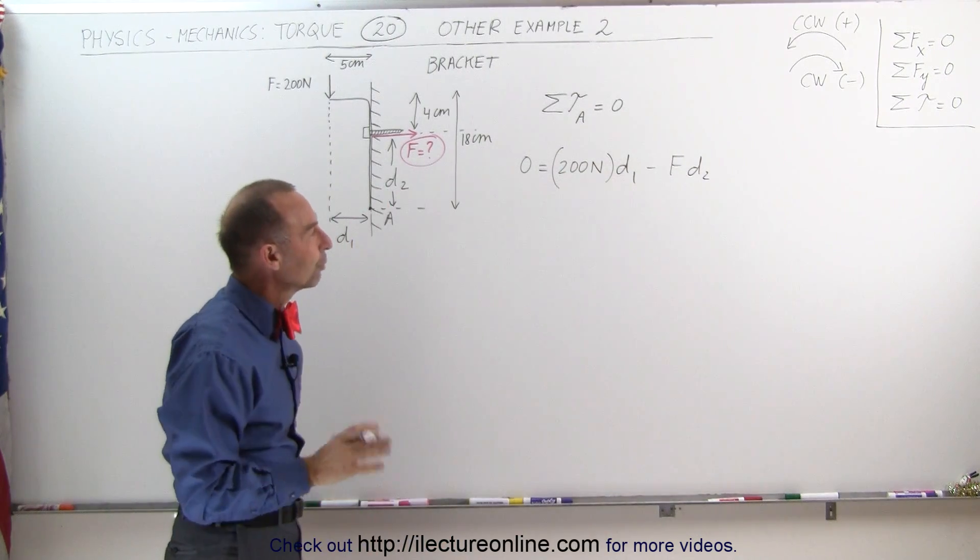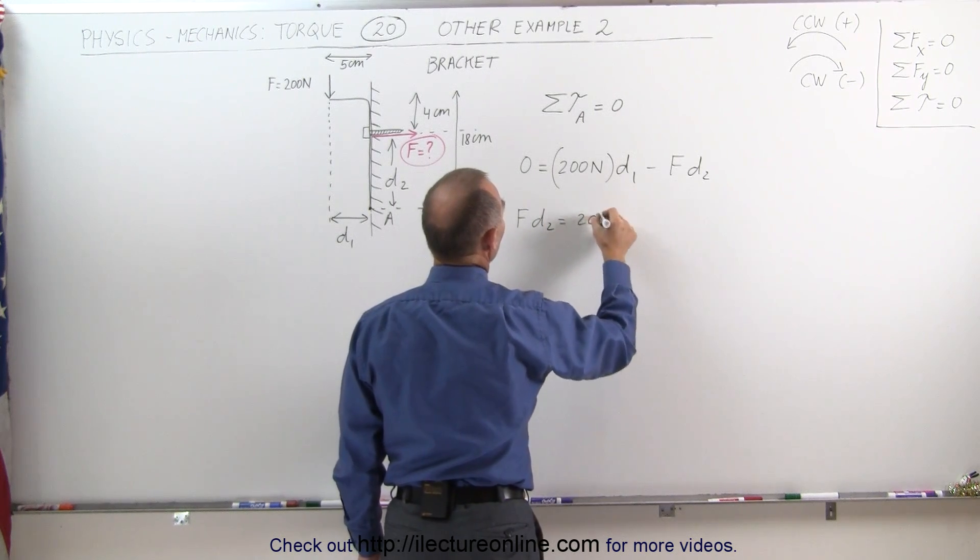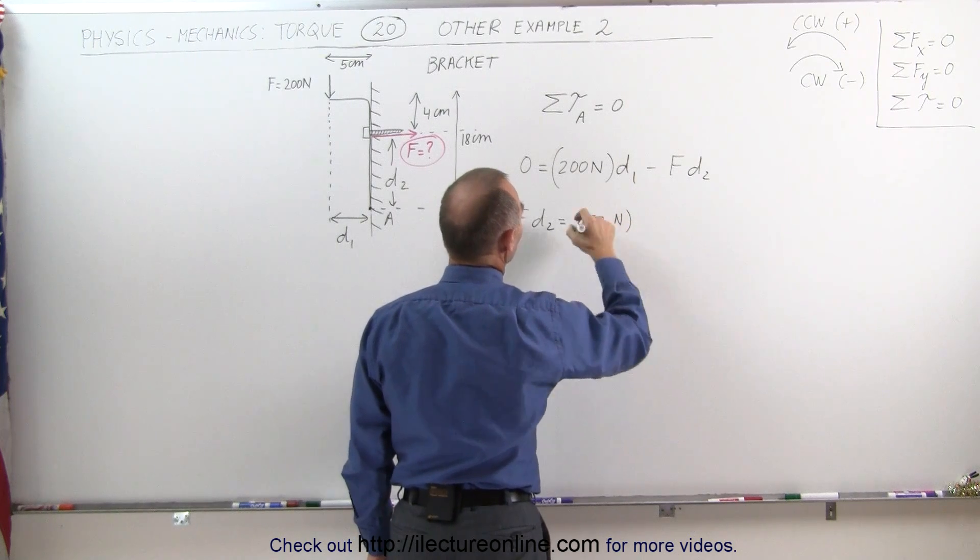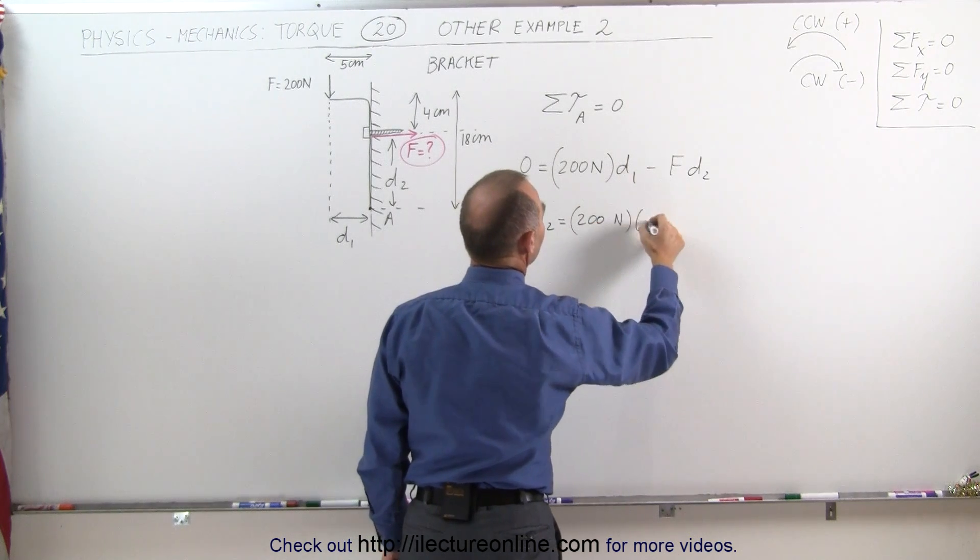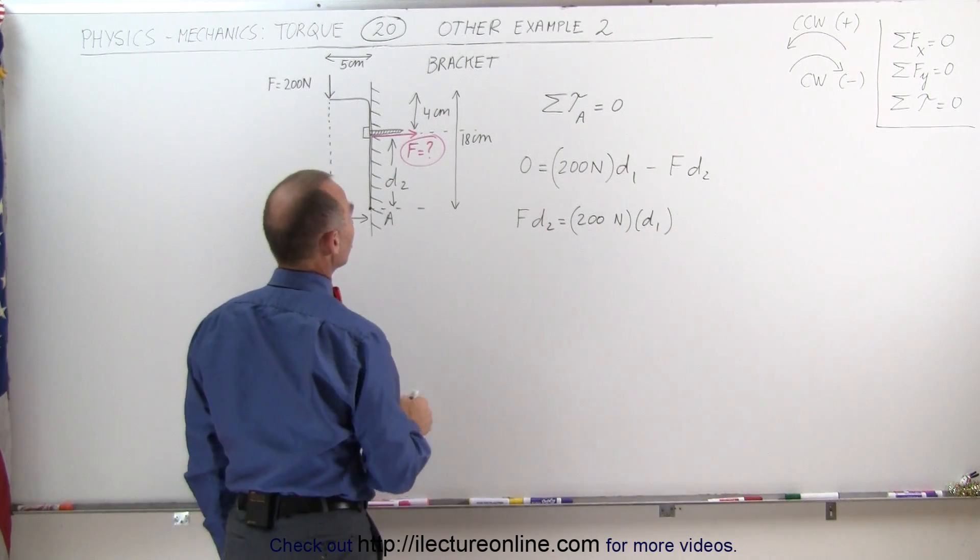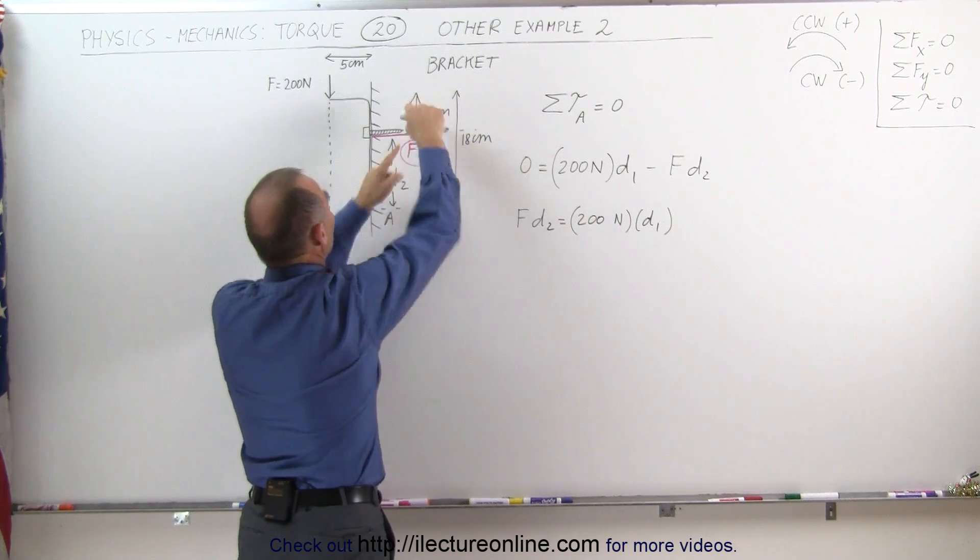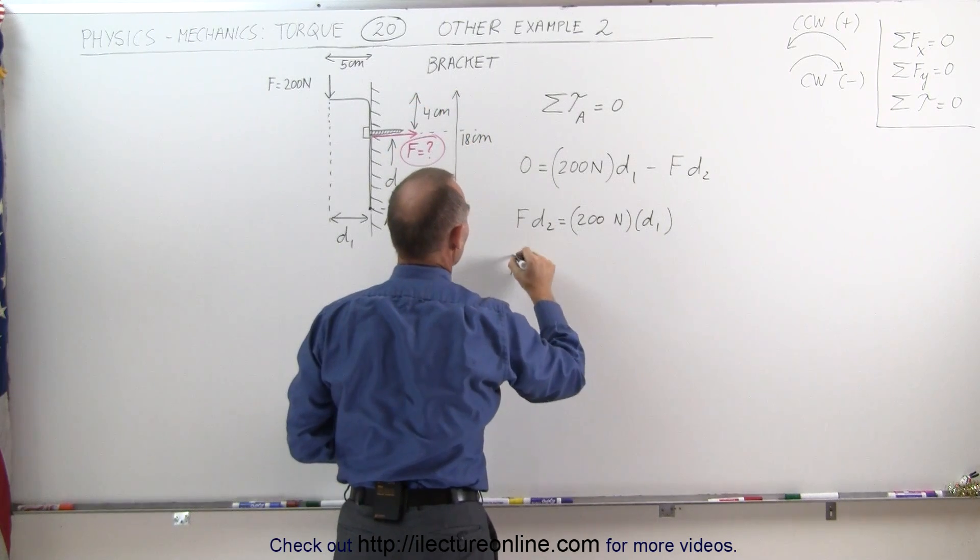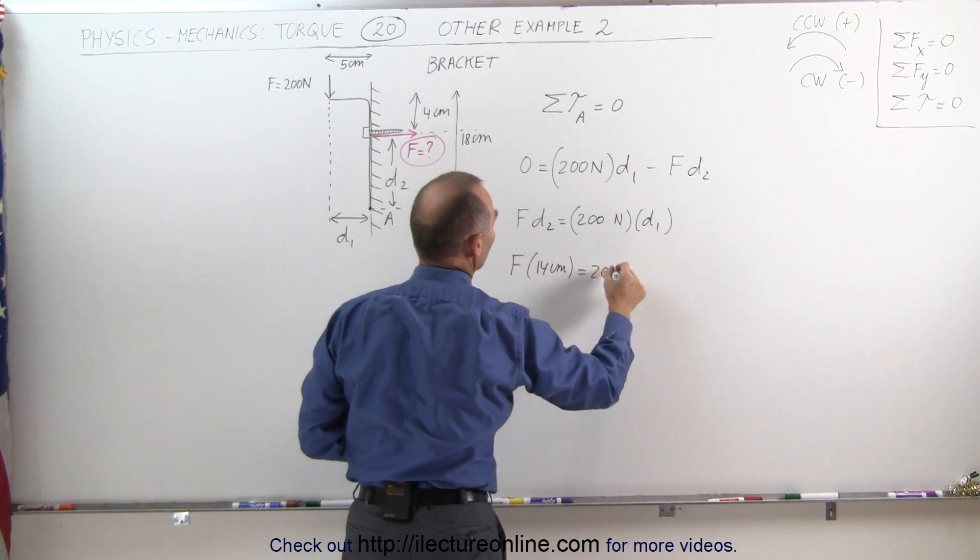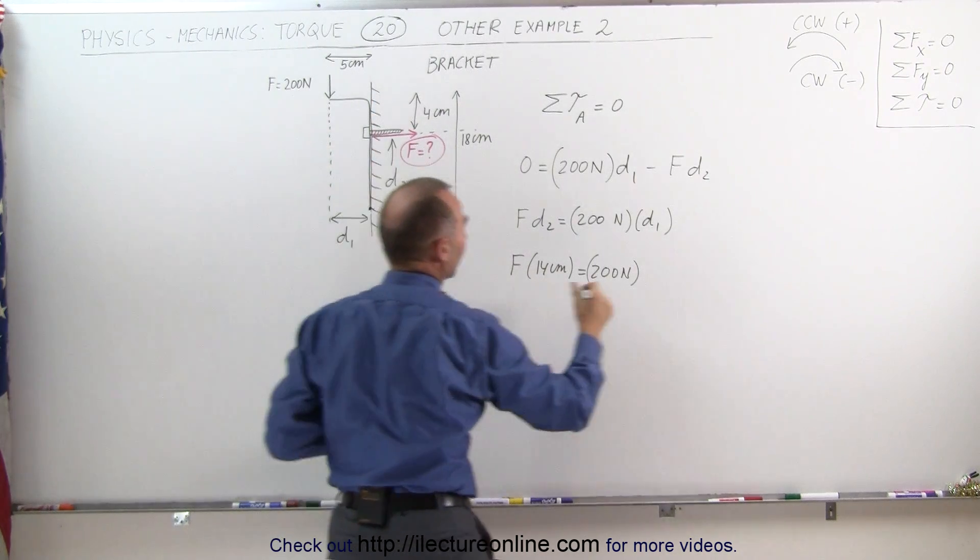Now we're ready to solve for the force. We can say that the force times distance 2 equals 2000 newtons—oops, not 2000, make it 200 newtons. That would be quite a flower pot! Times distance 1. Let's plug in some values for distance 1 and distance 2. Distance 2 is 18 centimeters minus 4 centimeters, that's 14 centimeters. F times 14 centimeters equals 200 newtons times distance 1, and distance 1 would be 5 centimeters.